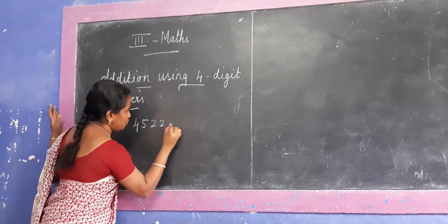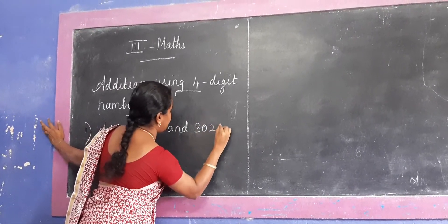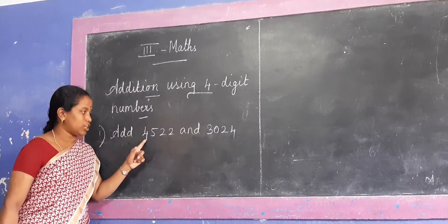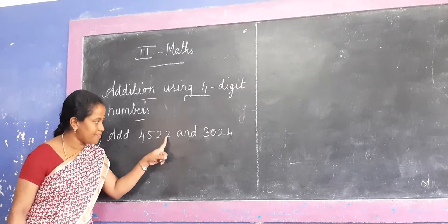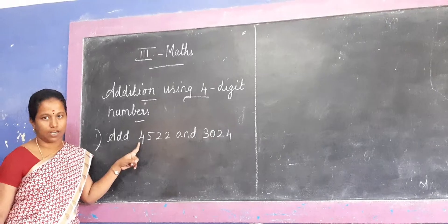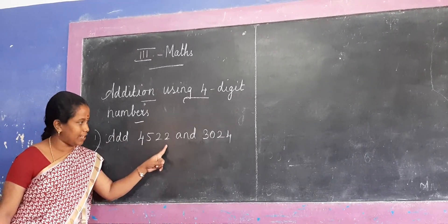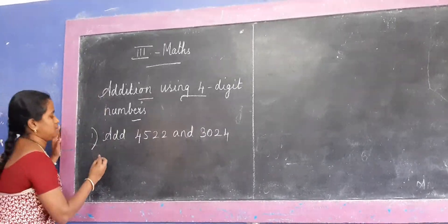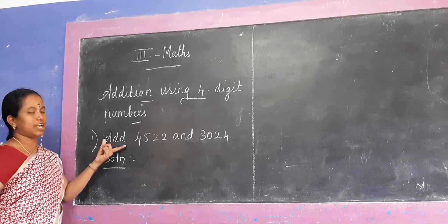First question, add 4522 and 3024. So, this is the question. Add 4522, 4 digit number. 1, 10, 100, 1000. So, if you pronounce it, 4522 and 3024.